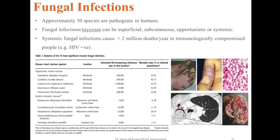While most fungi are harmless and environmentally useful, there are over 50 species that are pathogenic in humans. Fungal infections, also known as mycoses, can be classified by their presentation or location such as superficial or subcutaneous. They can also be classified as opportunistic or systemic. Systemic fungal infections cause more than 2 million deaths annually, particularly in those who are immunologically compromised such as people who are HIV positive.